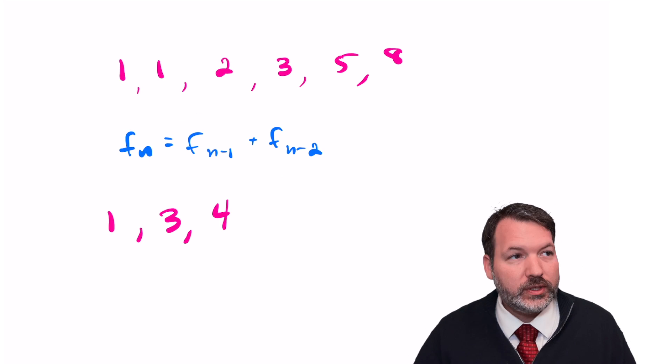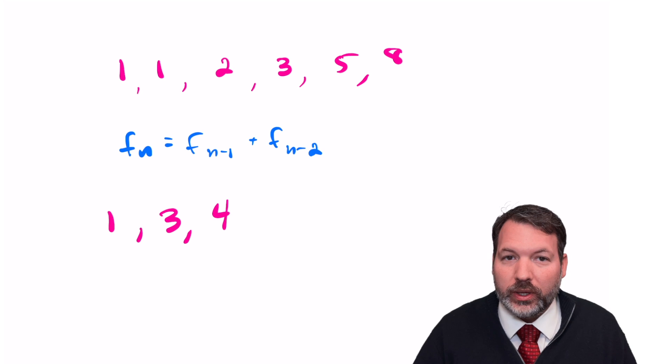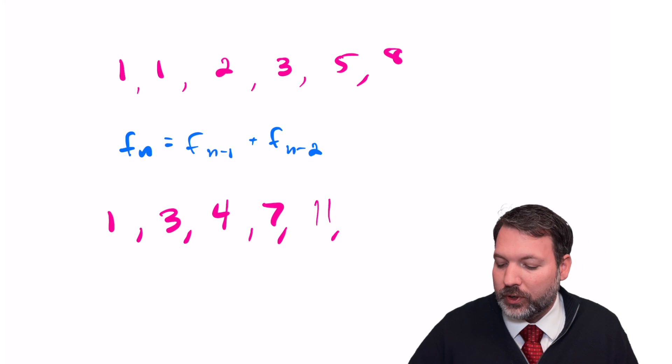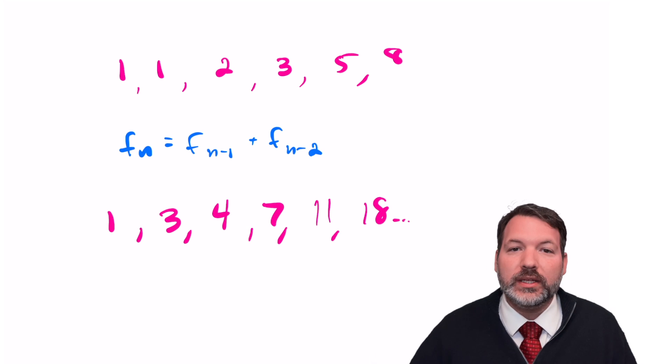1 and 3 makes 4, so that's the next term in the Lucas sequence. 3 and 4 make 7, 4 and 7 makes 11, and so on and so on.